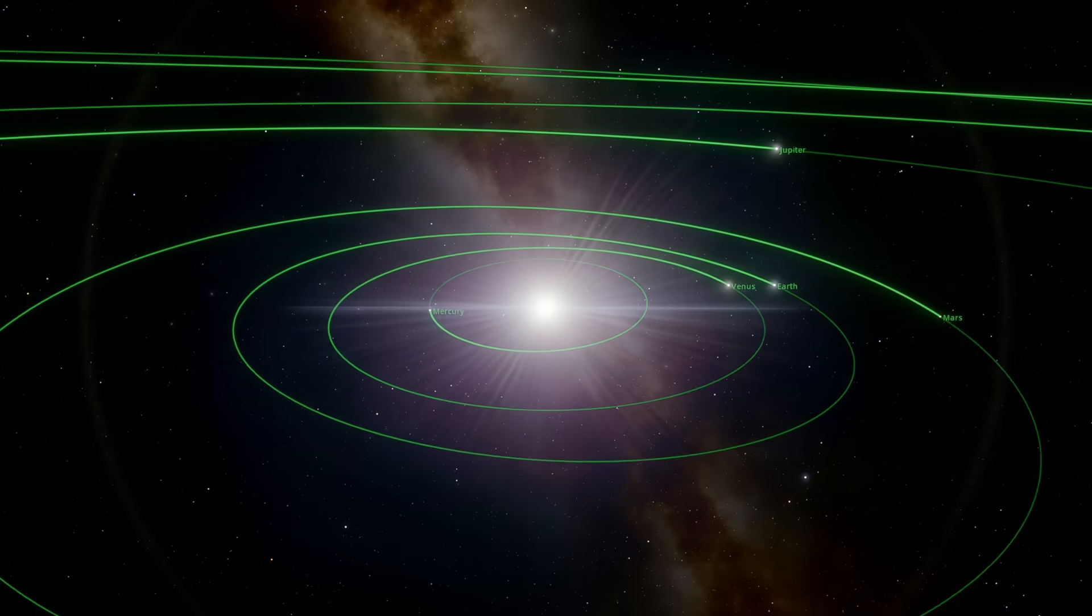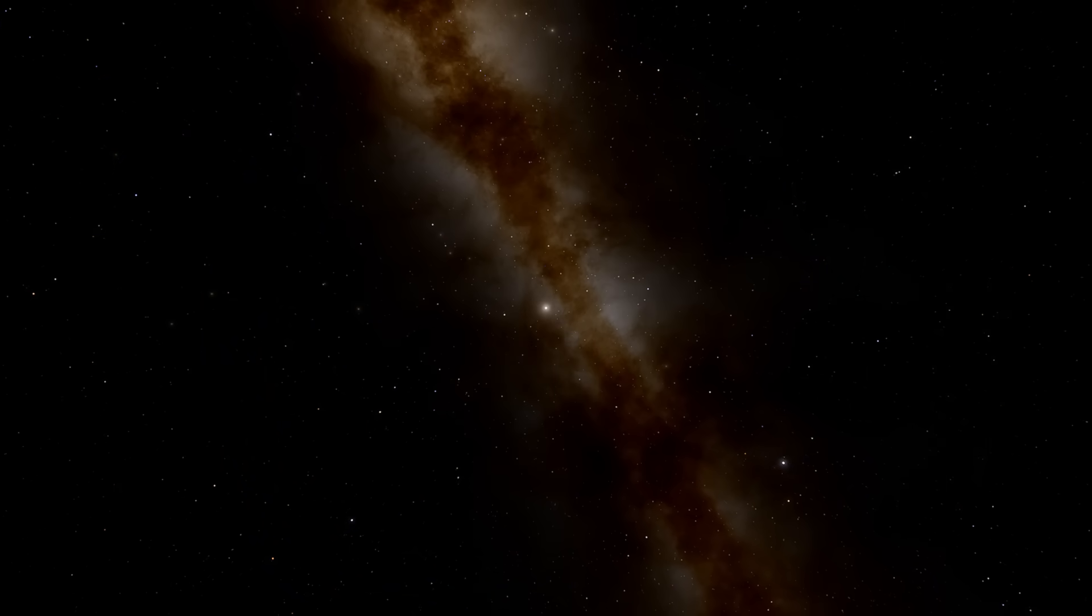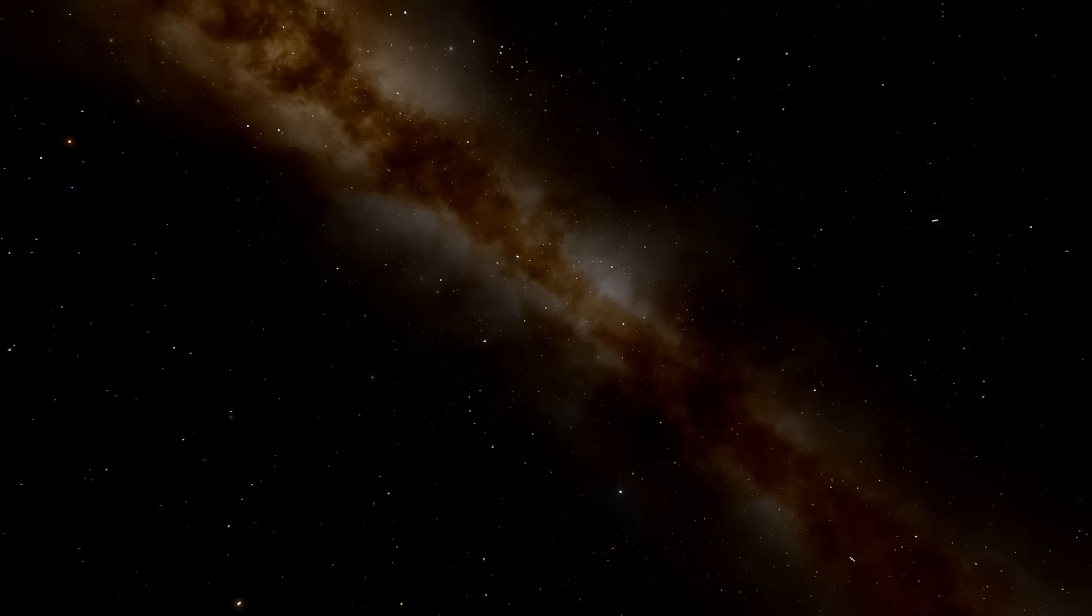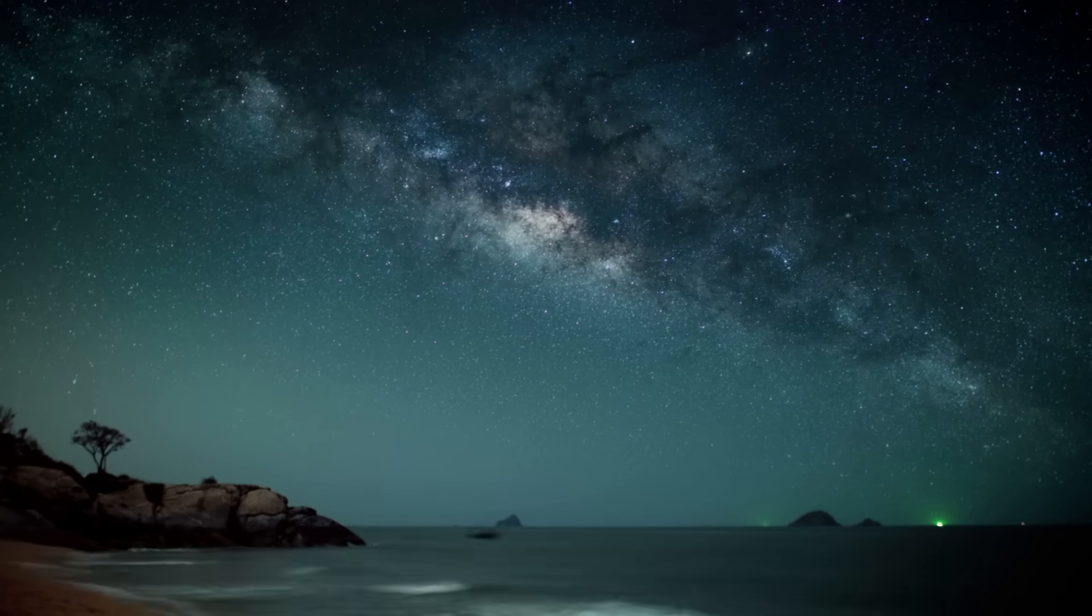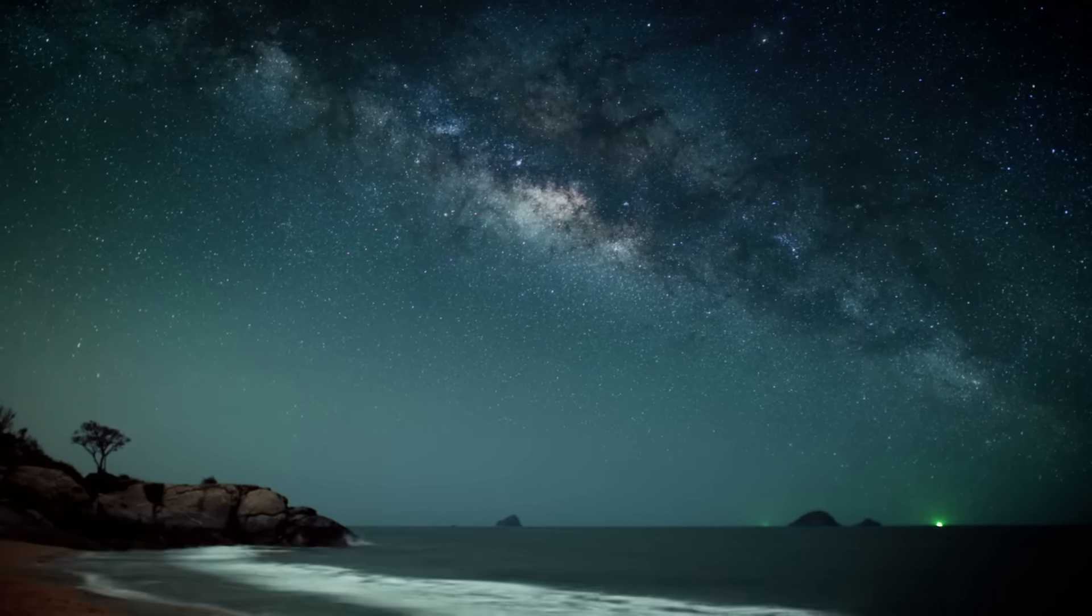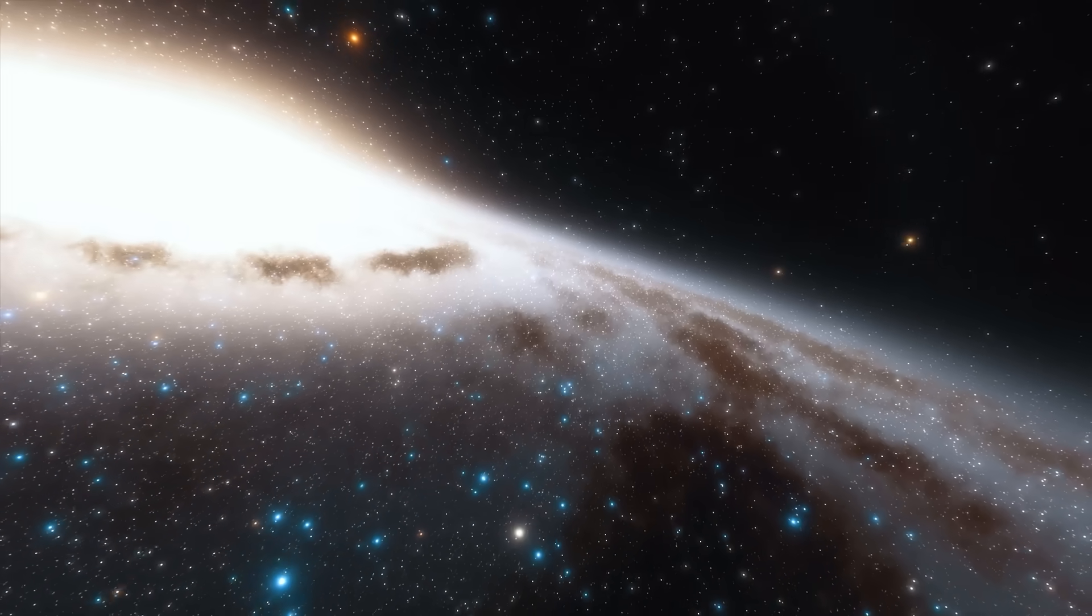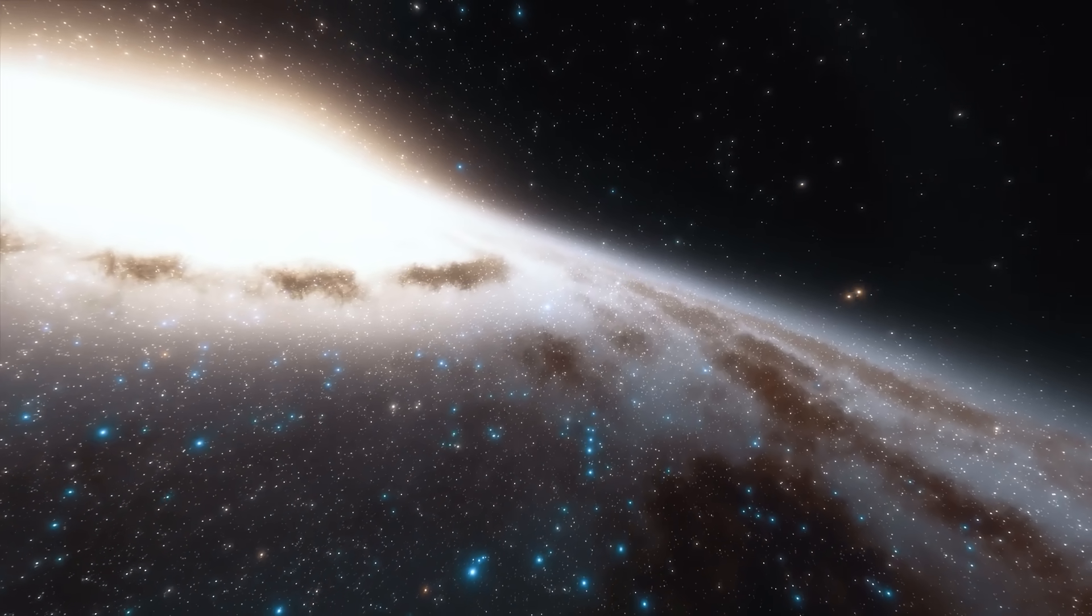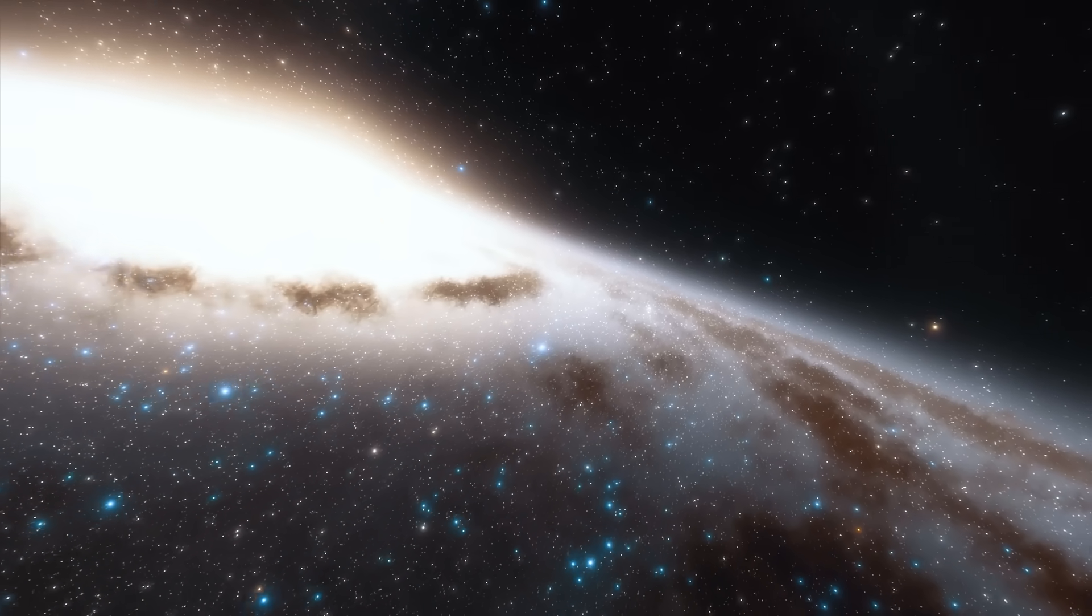We continue our space journey by slowly moving away from the sun and stars close to the sun. The sun is just one of the 100 to 400 billion stars in the Milky Way galaxy. When you go to a rural place away from light pollution, you will notice a pale cloud-like structure that crosses the sky. This structure is the Milky Way galaxy, a collection of billions of stars and interstellar gas and dust. Our sun is also located in this gigantic structure.